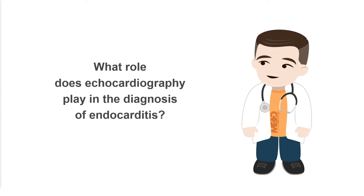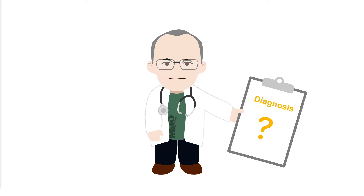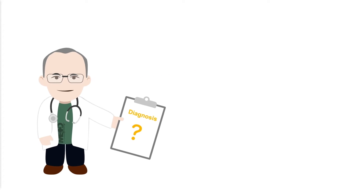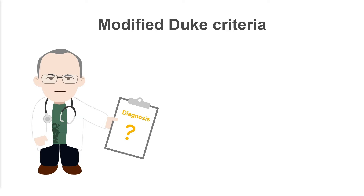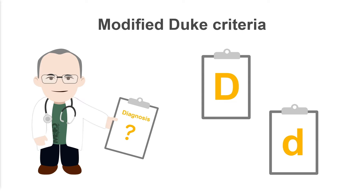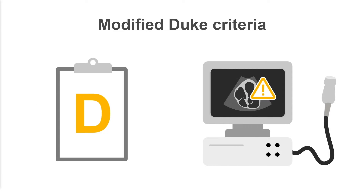What role does echocardiography play in the diagnosis of endocarditis? The clinical diagnosis of endocarditis can be made using the modified Duke criteria, which divides clinical features into major and minor criteria. One major criterion for diagnosis is a relevant abnormality on echocardiography.